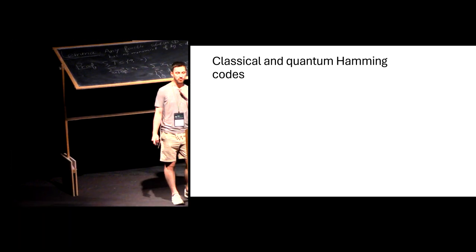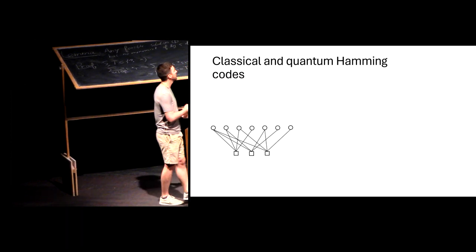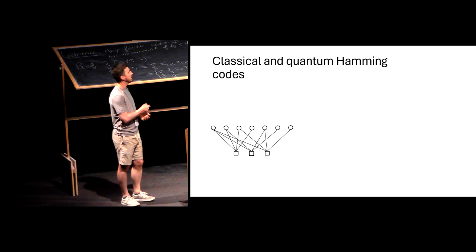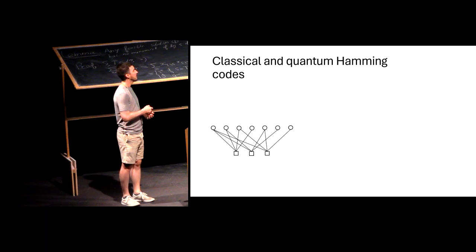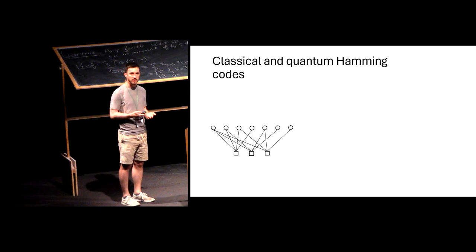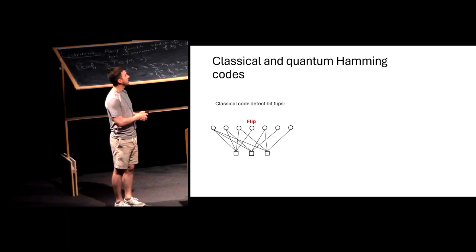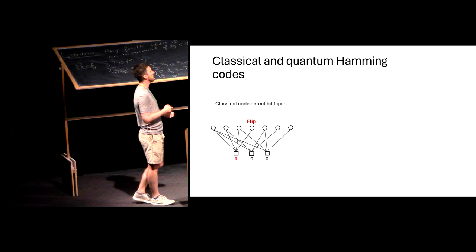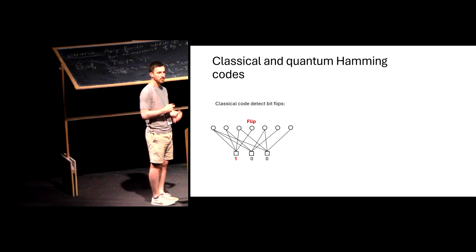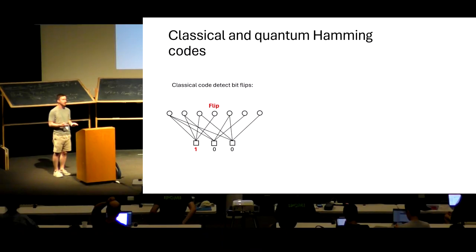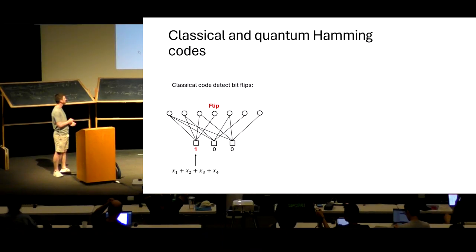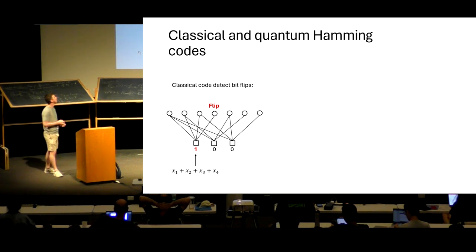We saw the Hamming code last time. This is a classical code with seven bits and three linear checks, so it encodes four logical bits, and it has minimum distance three — it can correct one bit flip. To correct a bit, we measure the syndrome: we measure the value of these checks, we get a value 0 or 1, and when we have a non-trivial value, it tells us that there was a bit flip somewhere and we can correct it. What we measure — this syndrome bit — is the parity of the four incident bits.